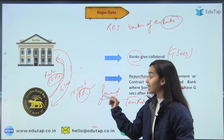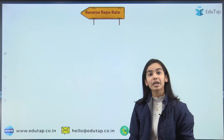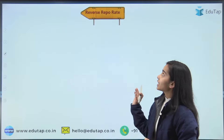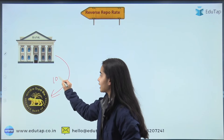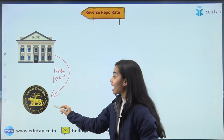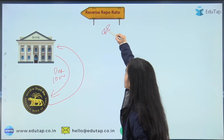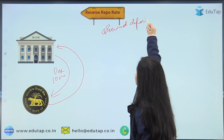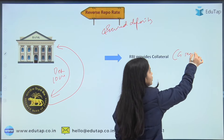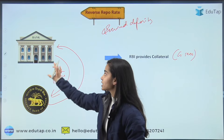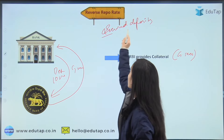Currently the repo rate is 4% and the current reverse repo rate is 3.35%. In the reverse repo rate, the RBI is taking deposits from the bank. The bank gives, say, 10 crore as a deposit to the RBI. Now the RBI gives collateral to the bank because the reverse repo deposit is said to be a secured deposit — the RBI provides government securities as collateral to the banks depositing their money.